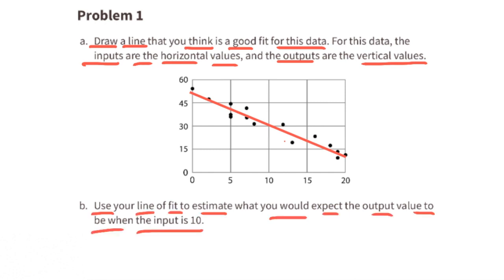B. Use your line of fit to estimate what you would expect the output value to be when the input is 10. Remember, the inputs are the horizontal values, so when the input is 10, the output would be about 30.